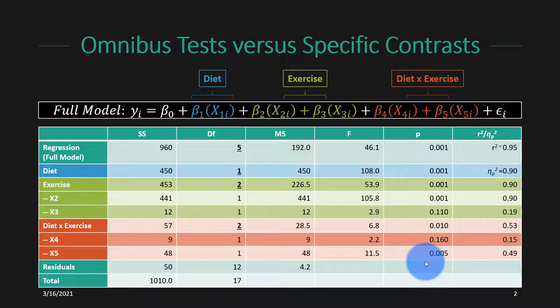One way of understanding practical significance — how large the effect is — is represented in the effect size. There are some concerns here because there's the effect we observe in our sample, but due to sampling variability the true effect could be anywhere within a confidence interval of what we observe. So we don't necessarily want to just stick with the point estimate, but looking at standardized effect sizes is a useful way to get started on this idea.